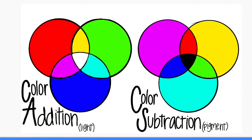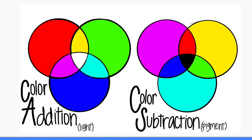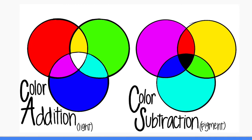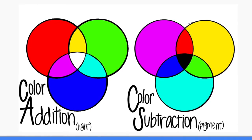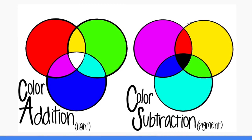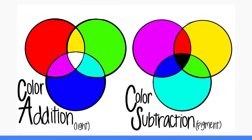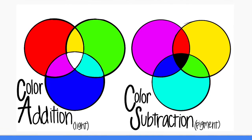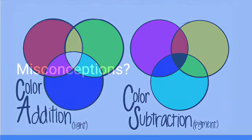If you have magenta, it's due to the fact that green was taken away from the color. If you have cyan, it's due to the fact that red was taken away, and if you have yellow, it's due to the fact that blue was taken away. But if you mix magenta, yellow, and cyan together, it's all subtracting, turning into black. That's how you get black objects — just like white objects come from red, blue, and green.